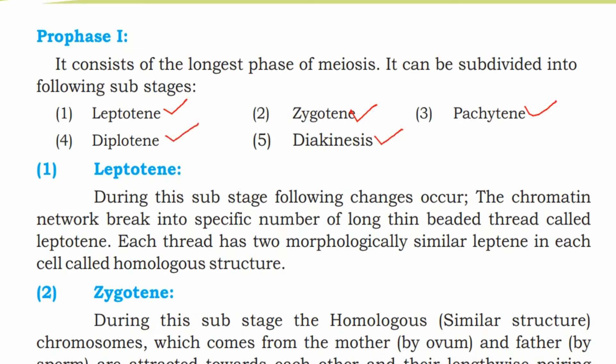In leptotene, the chromatin network breaks into a specific number of long, thin, beaded threads called leptotene threads. Each thread has two morphologically similar chromatids in each cell, called homologous structures.